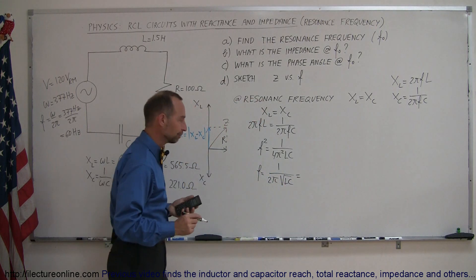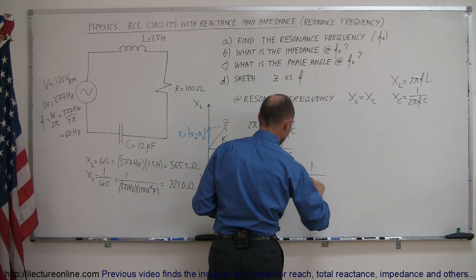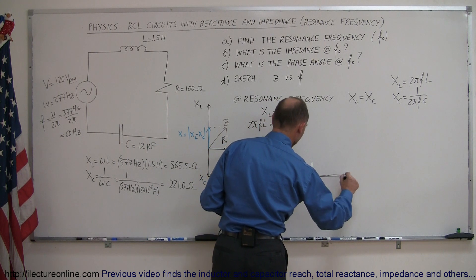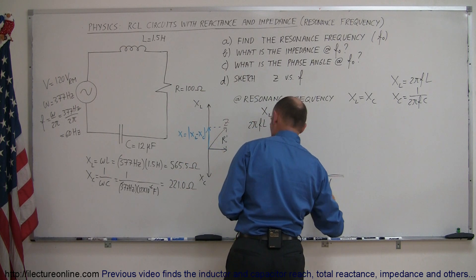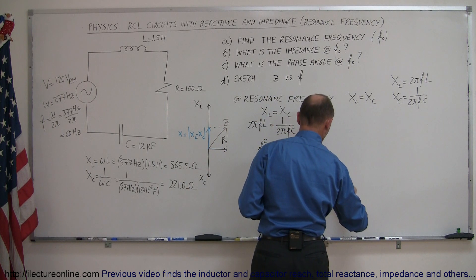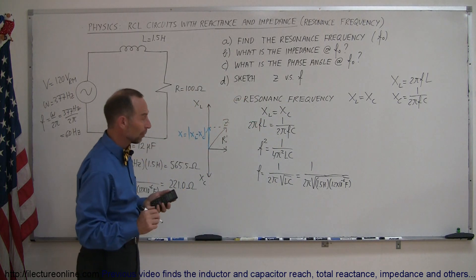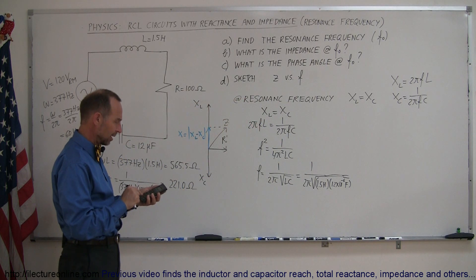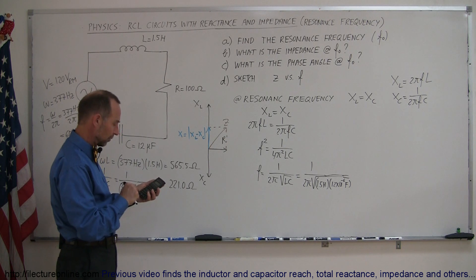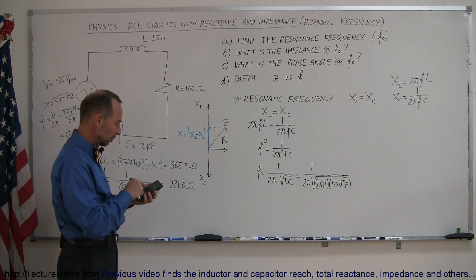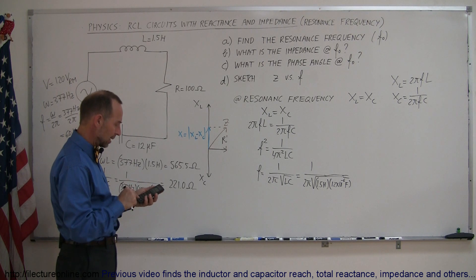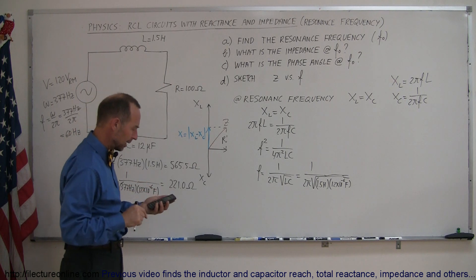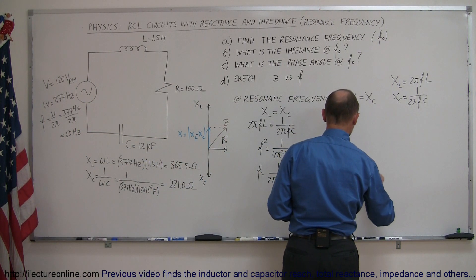Now plug in the values that we have. That's 1 over 2π times the square root of L. Now L was 1.5 Henrys, and C was 12 microfarads, so 12 times 10 to the minus 6 farads. So 1.5 times 12E to the minus 6, take the square root of that, multiply that times 2, multiply that times π, and then take the inverse, and it's 37.5 hertz.